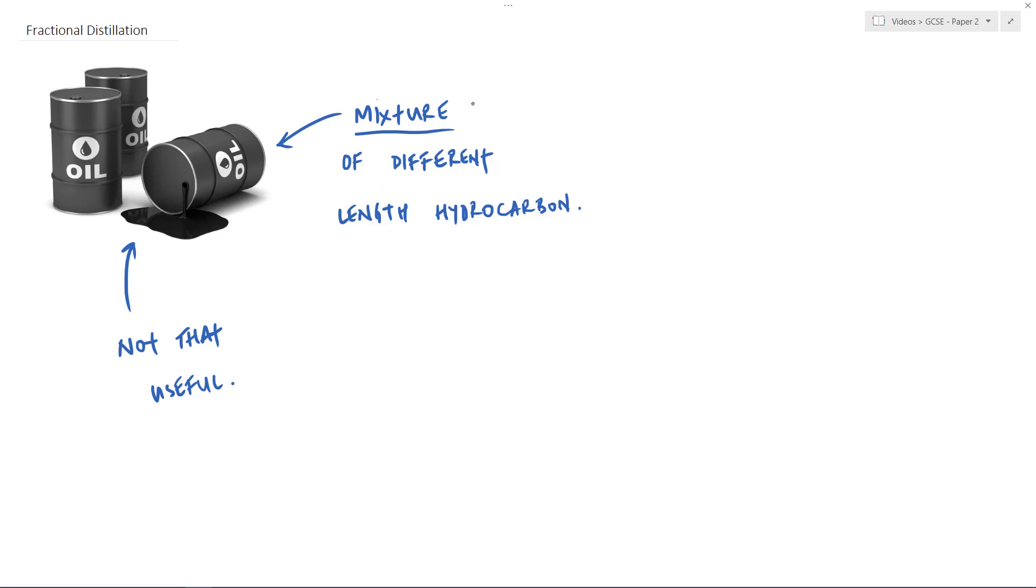And the method of separation for crude oil, so separating it into more useful things which can be used, as I mentioned, for things like fuels for example, this method of separation is called fractional distillation. So distillation, the usual process of vaporizing and condensing, same principle here is being used, but on a much larger industrial scale with obviously much more grand equipment.